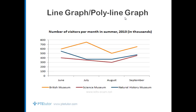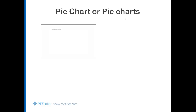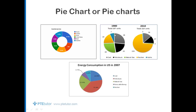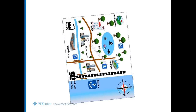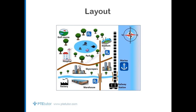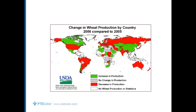Next, the image could be a pie chart or pie charts with slices. As mentioned earlier, there could be more than one image in a single question — this shows an example of that. It could also be a single pie chart. Next, the image could be a layout, and the one after that could be a map.